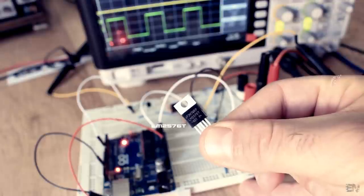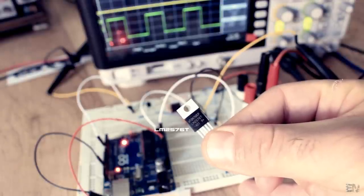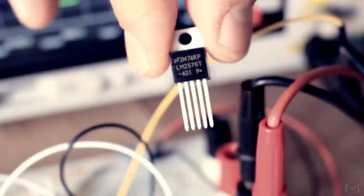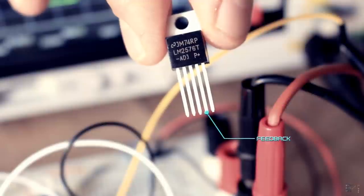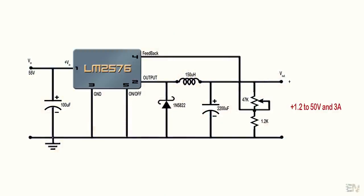This is the LM2576 buck converter driver. It already has a feedback pin that will sense the current. This is the basic circuit for the buck converter using this IC.